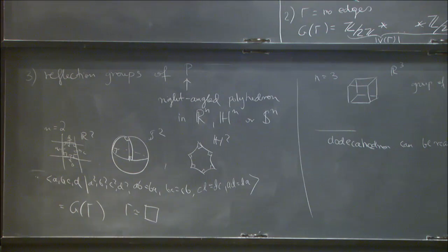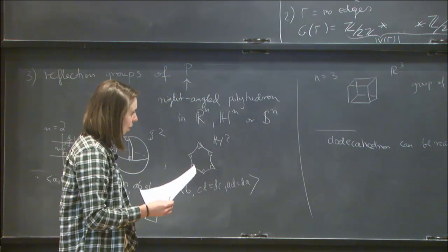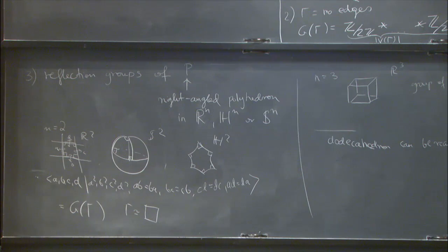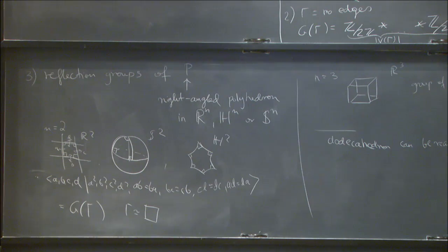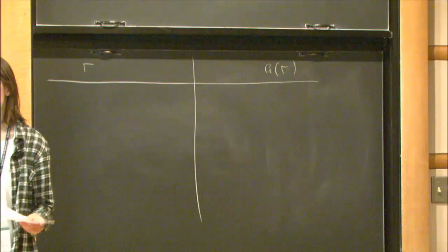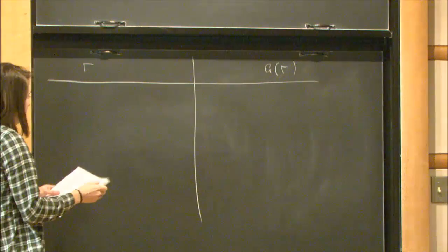Now let me discuss the connection between the graph and algebraic properties of the group — not just for reflection groups, but in general. There are many things we can say about right-angled Coxeter groups just by looking at the graph gamma.